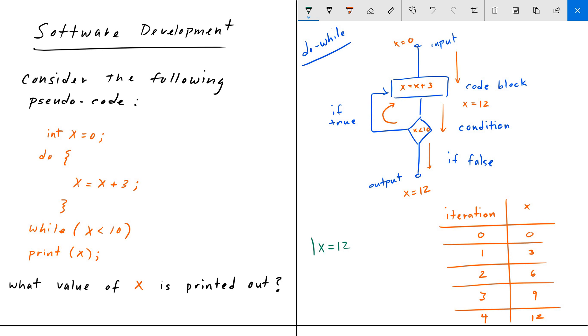Here, this code is going to output the value 12. So there you have it. This is the answer: X is equal to 12. That's the value of X that's going to be printed out for this pseudocode here.